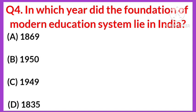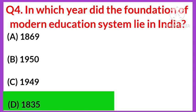Question number four: in which year did the foundation of the modern education system lie in India? Your options are: A) 1869, B) 1950, C) 1949, D) 1835. The right answer is option D, 1835.